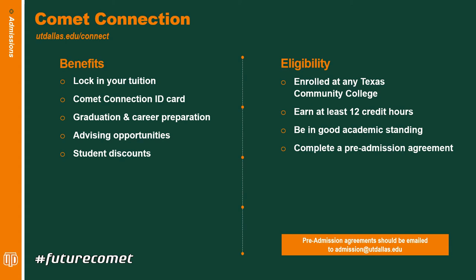Another opportunity we have for prospective transfer students is Common Connection, and this is a partnership we have with every community college in the state. The main benefits that students get excited about within this program are the ability to lock in your tuition rate early and for five years, which is a huge benefit, and also the opportunity to meet with academic advisors. Being a Common Connection member, you can go speak with an advisor in your academic department at UT Dallas and have more in-depth discussions about the courses you'll be taking down the road and take a detailed look at your degree plans.